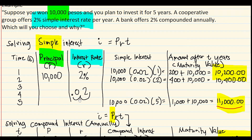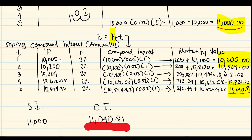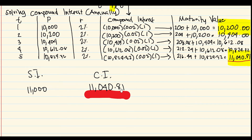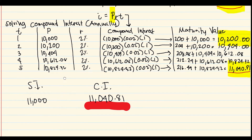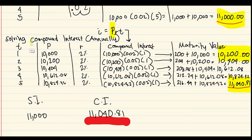Comparing results: simple interest gives 11,000, and compound interest gives 11,040.81. Which will you choose? Of course, 11,040.81 — because it is higher. The greater the principal and the greater the time, the greater the difference between compound and simple interest. So if you are planning to deposit money, go for compound interest.